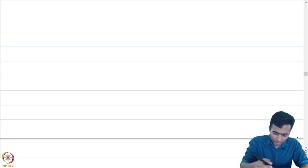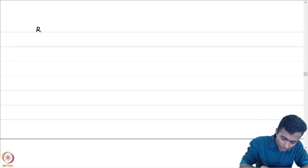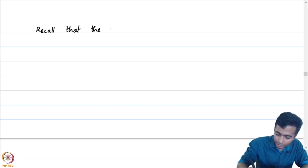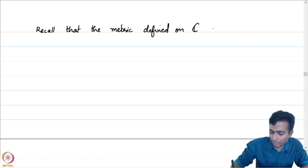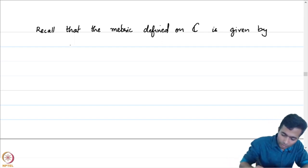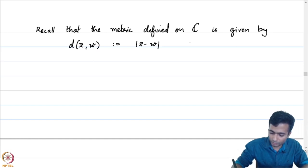I will start by recalling the metric that we defined. Recall that the metric defined on C is given by D(z, w) defined to be the absolute value of z minus w, for z and w in C.